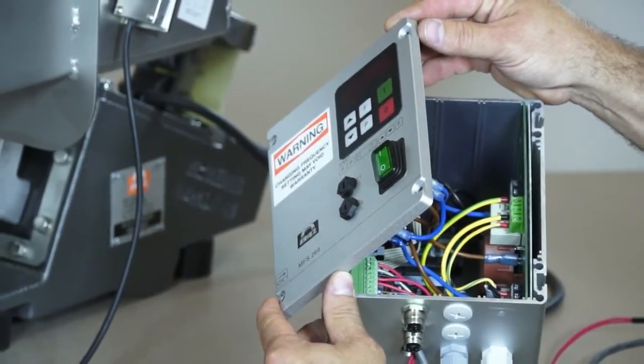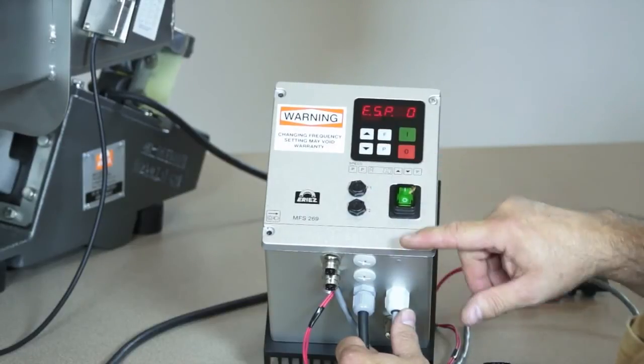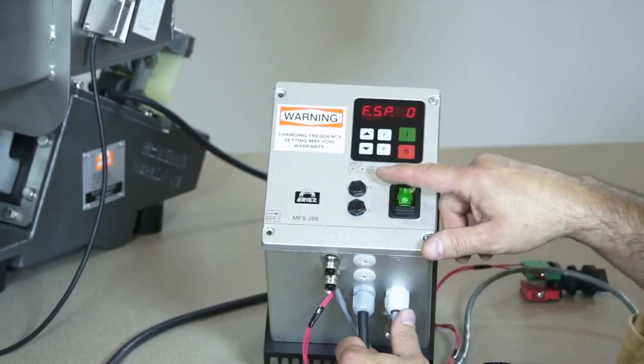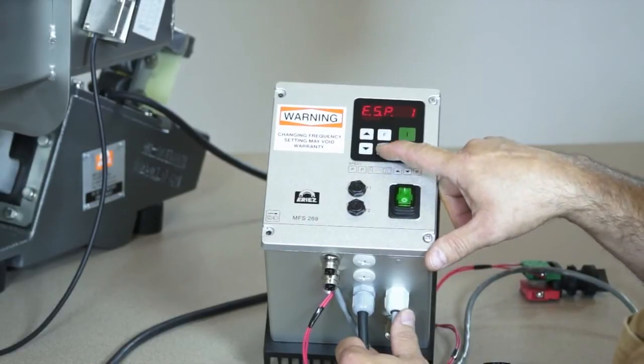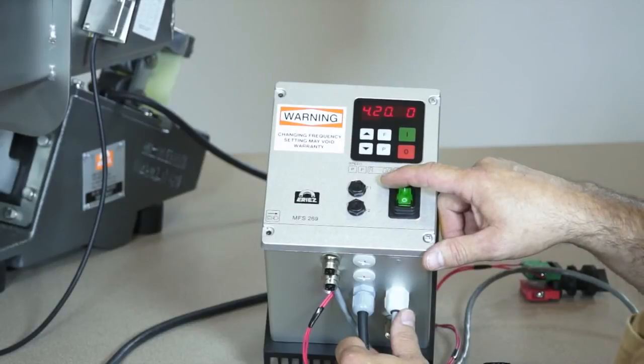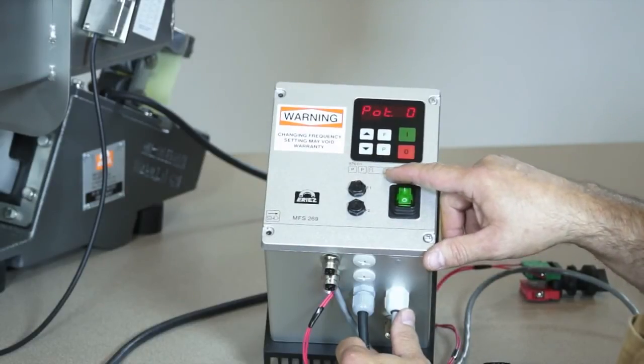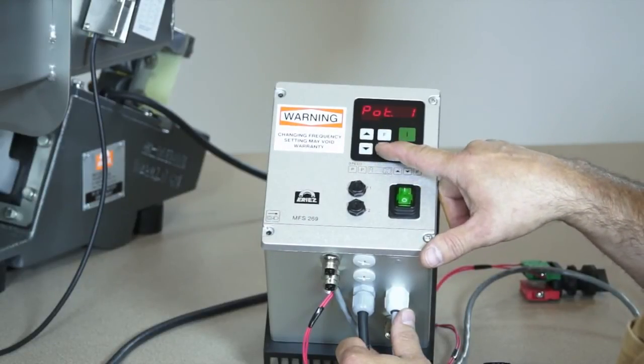This will allow us to adjust the amplitude from a remote location. After powering up, we can go to parameter code 003 and select the set point source. We need to make the following changes. Change ESP, the external set point, to 1. Leave 4 to 20 at 0. Change POT to 1 for potentiometer and press P until we are at the running mode.